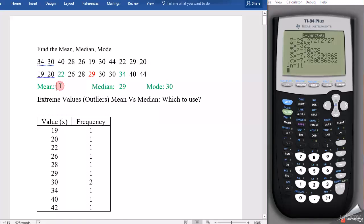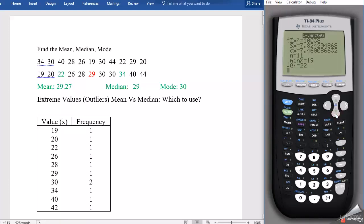If you want to see the median, you have to scroll down, and you can see Med is 29, just like we found out before. The middle number is 29.